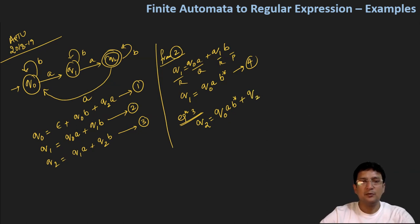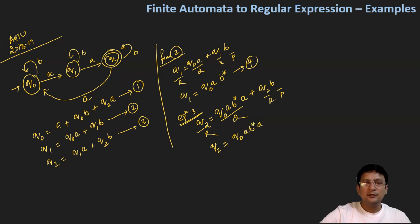Q2 equals q plus rp form, we can represent it. Yes, we can. So the answer will be Q2 equals q, which means Q0ab star a, and then b star. So this is equation number five.